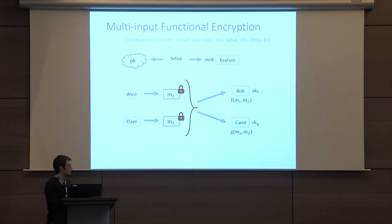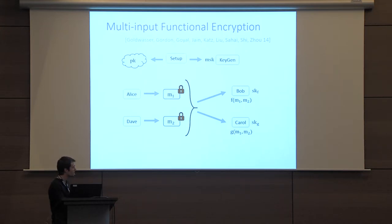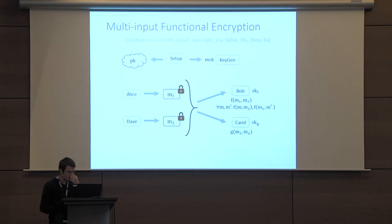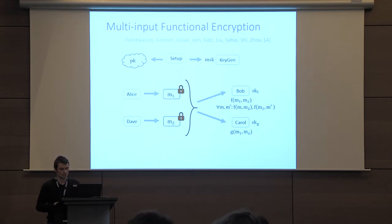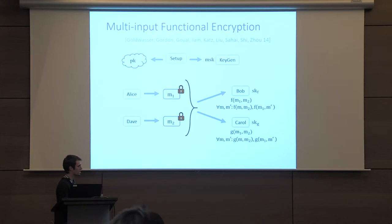In the public setting, a secret key for F leaks much more information than just F of M1 and M2. Because Bob, for example, could encrypt any messages he wants for slot 1 and any messages he wants for slot 2. He could extract much more than just F of M1 and M2 — also F of M and M2, and F of M1 and M', for any messages M and M' of his choice. This is a lot of leakage, and by definition it is inherent. The same holds for Carole or any other secret key.